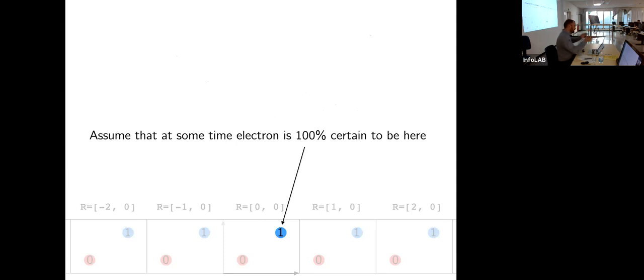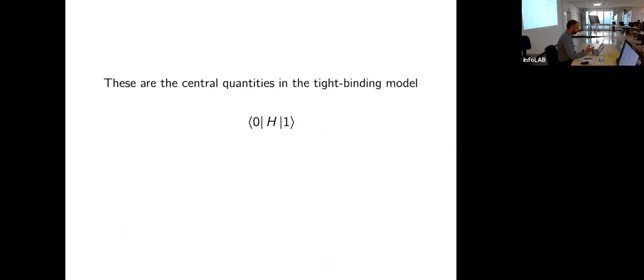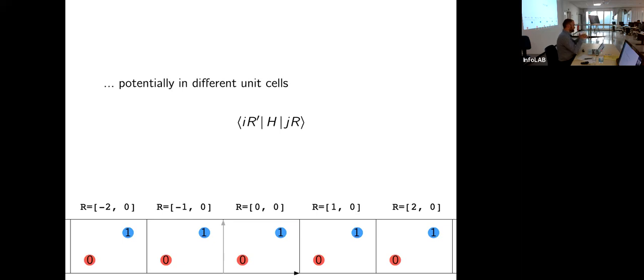So this electron placed in the blue orbital — you can parameterize the five-percent probability of moving to the red orbital with the hopping matrix element. The overlap between the red and blue states with the Hamiltonian, squared, is proportional to the probability of finding the electron nearby. This is the hopping integral — the central quantity of the tight-binding model you've seen in various talks at this summer school. Of course you can have hopping from any site i to j. If your system is periodic, hopping may happen between different unit cells — orbital j might be in some other unit cell R.